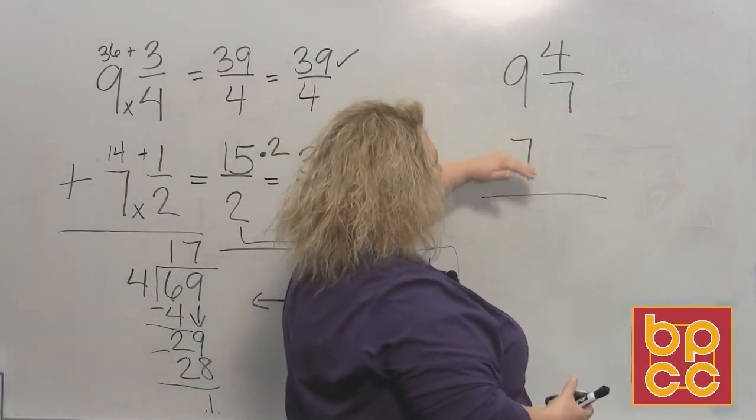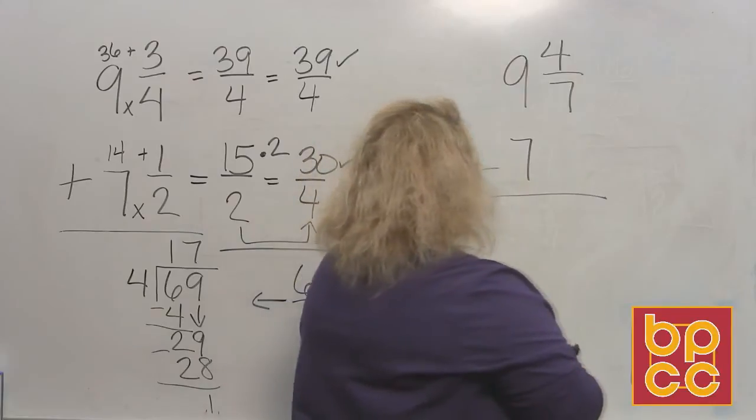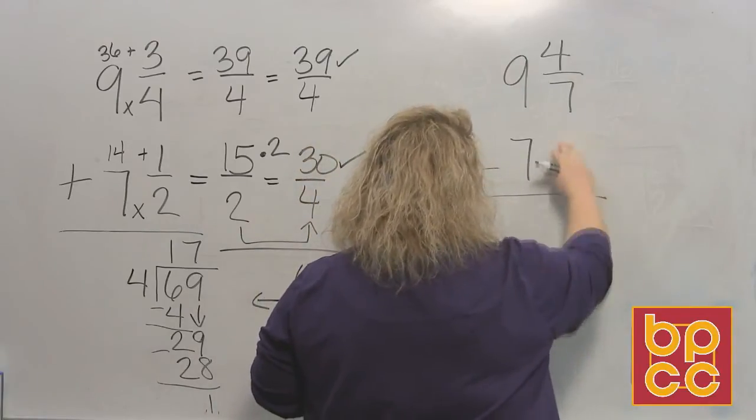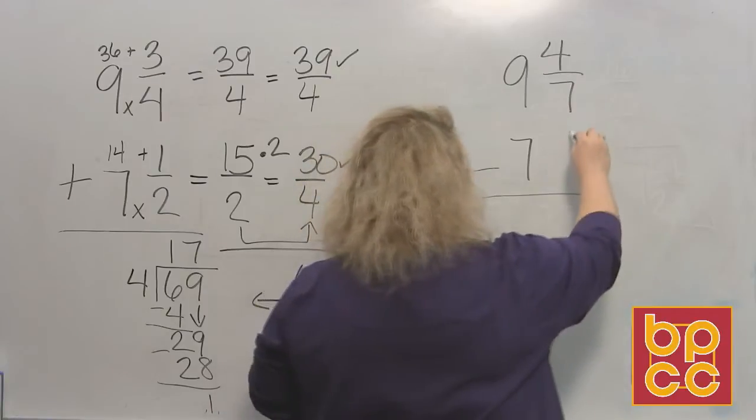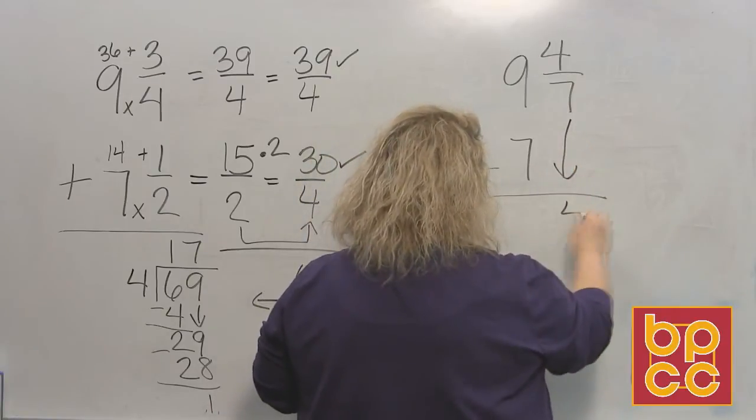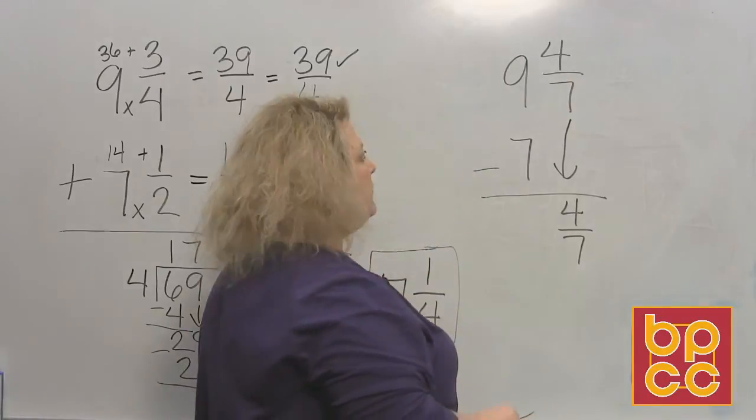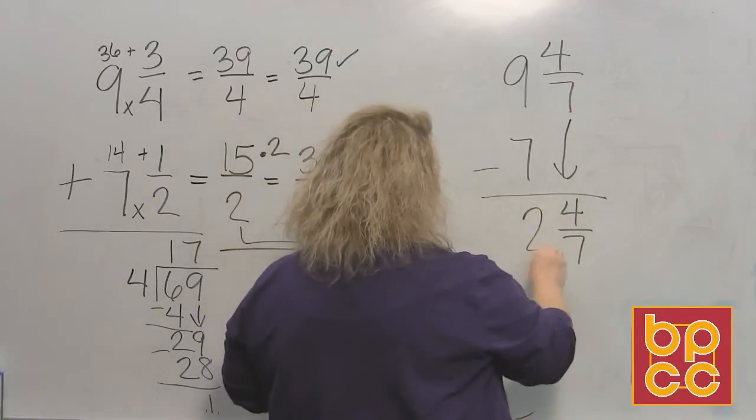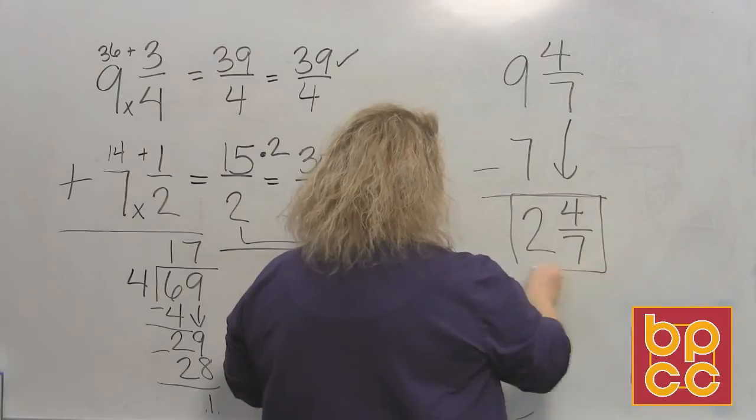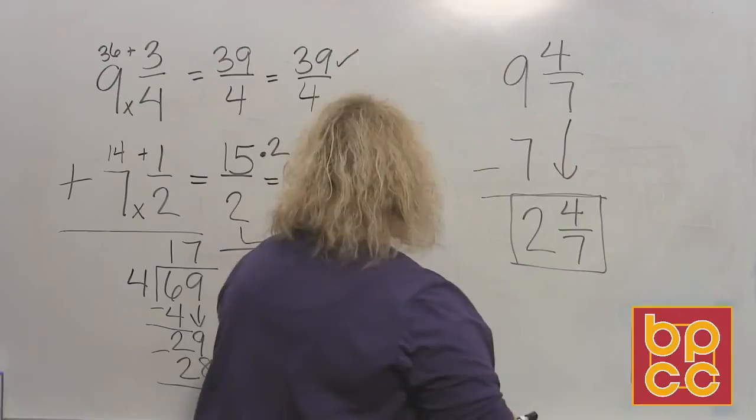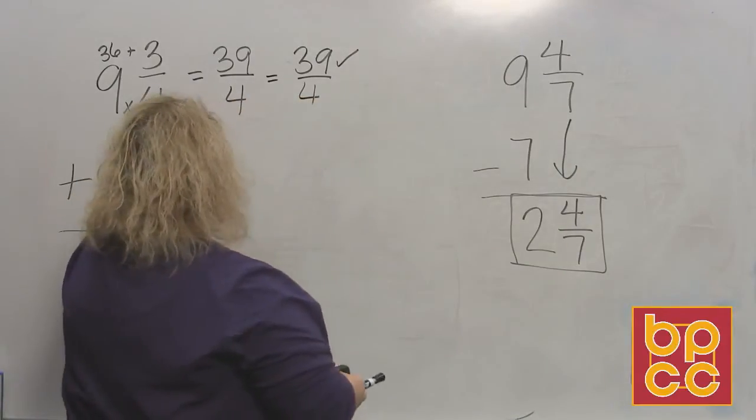So if I have four-sevenths and there's nothing here by the 7 to take away, then I just drop my fraction down into my answer, four-sevenths. And then that way all I have to do is subtract the whole numbers. Nine minus seven, which would be 2. So 2 and four-sevenths would be my answer.